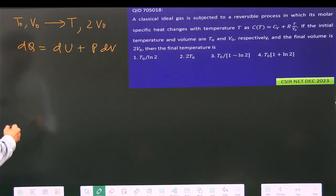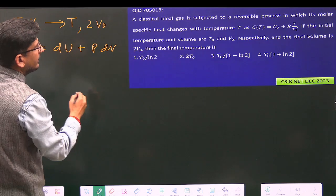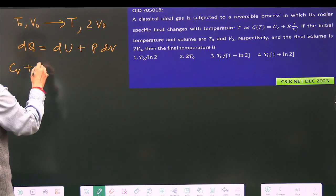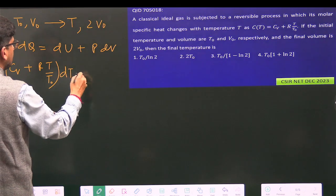dQ, you know, is C dT. And C is already given, so it is (Cv + RT/T₀) dT.